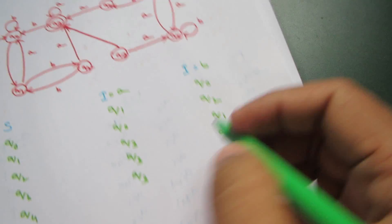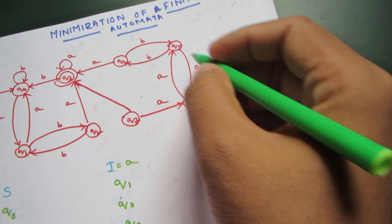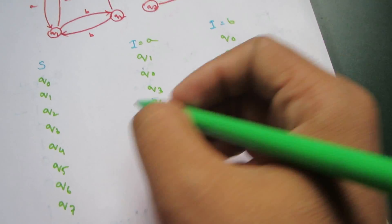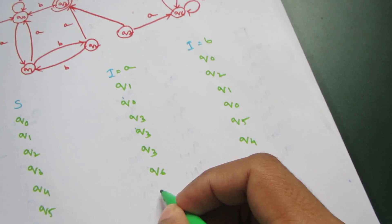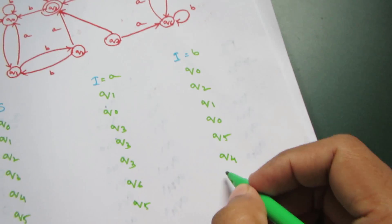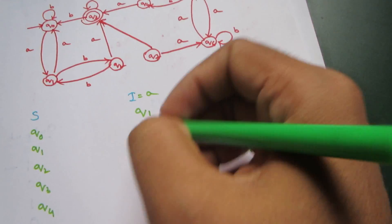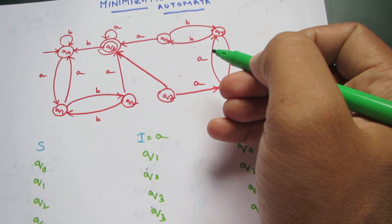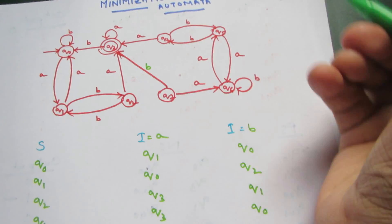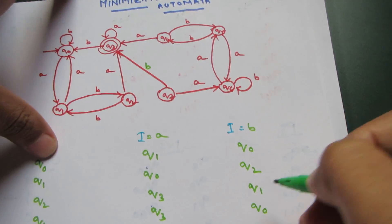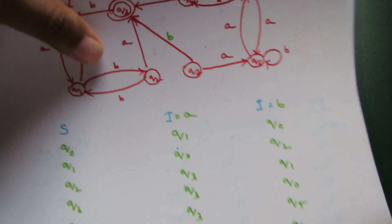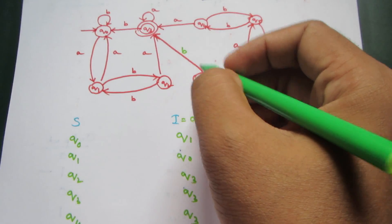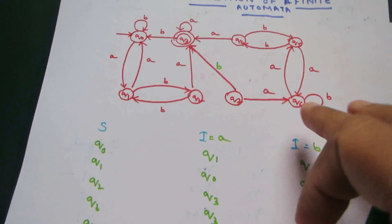For Q5, on B it goes to Q4. For Q6, on A it goes to Q5, on B it goes to Q6. For Q7, on A it goes to Q6, on B it goes to Q3. So this is the transition table.